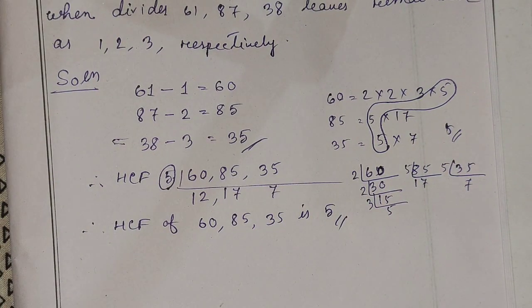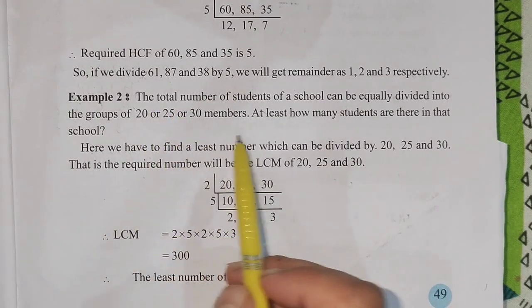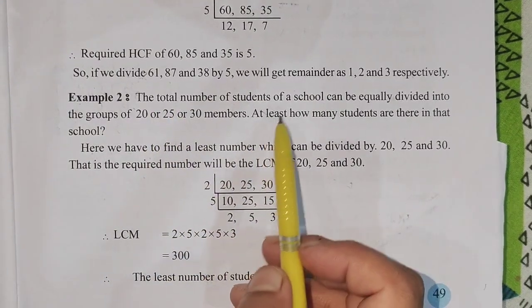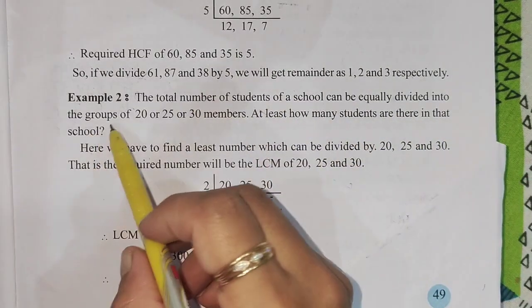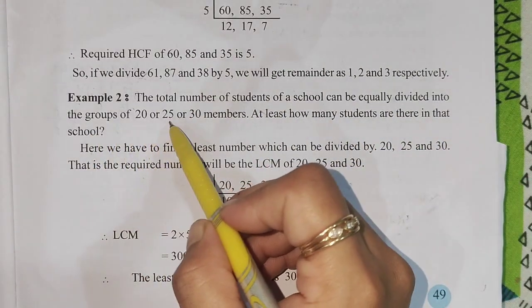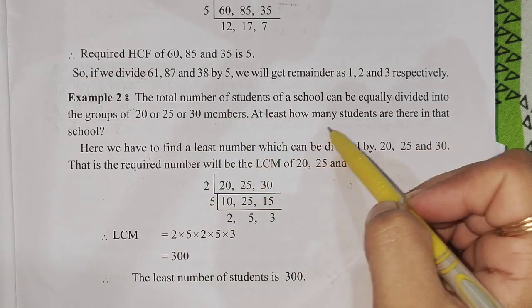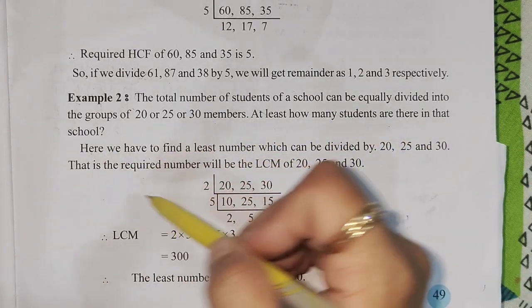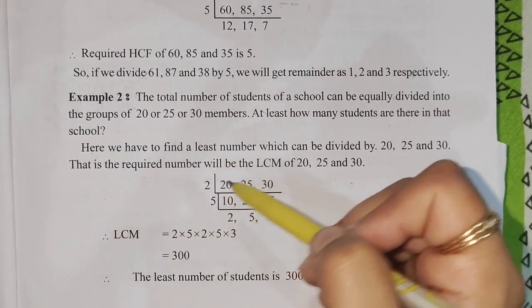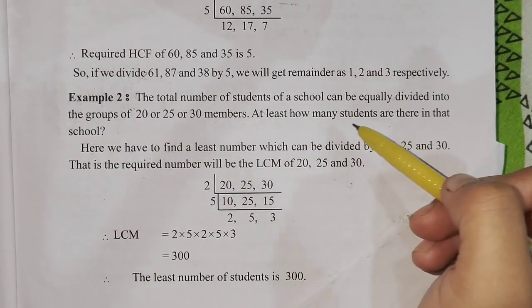Next is example 2. The total number of students of a school can be equally divided into groups of 20, 25, or 13 members. At least how many students are there in the school?